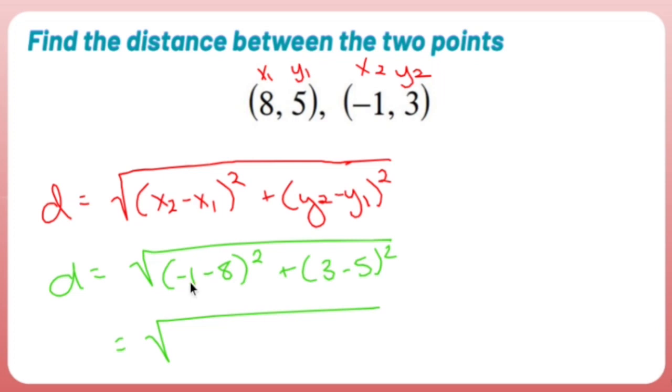Inside the square root, I have negative 1 minus 8, which is negative 9 squared. See what I mean? This is just going to become positive anyway. Plus 3 minus 5 is negative 2 squared.